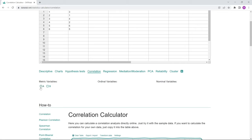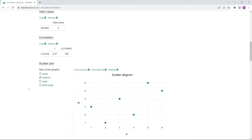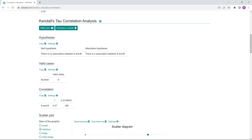Now, all you have to do is click here on Kendall's Tau and you're done. Here, you can see the results. We also get a Kendall's Tau of 0.47. If you're not sure how to interpret the results, just click on summary in words.